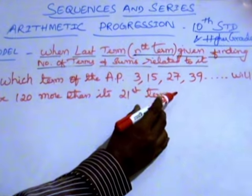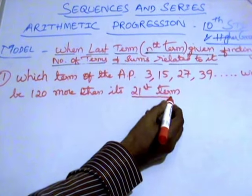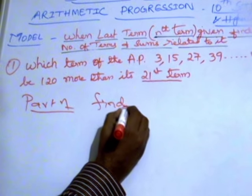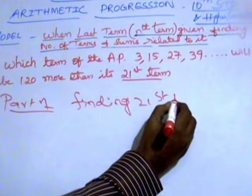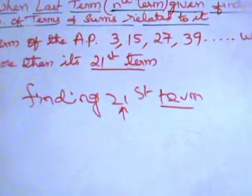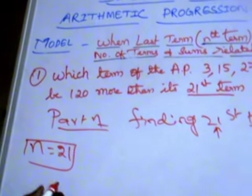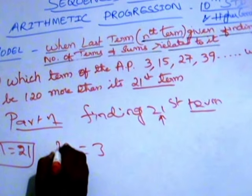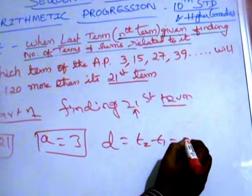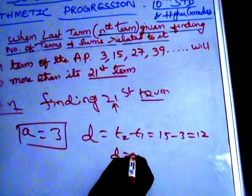Which term of the AP is 120 more than its 21st term? First we will find the 21st term — that's Part 1. Whenever the word 'term' comes, we call it N. So N is equal to 21. A is equal to 3, and D is T2 minus T1, which is 15 minus 3, which is equal to 12.